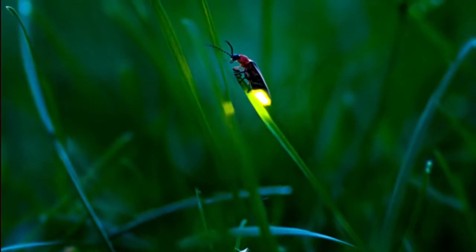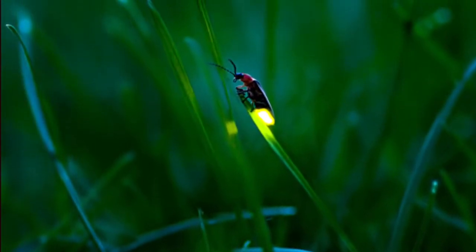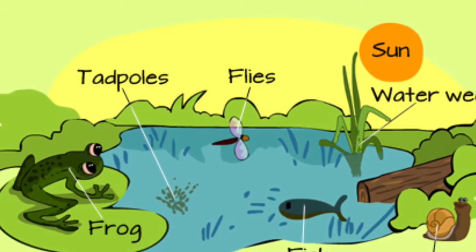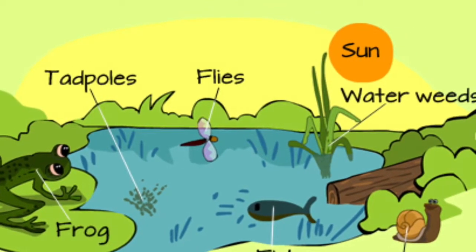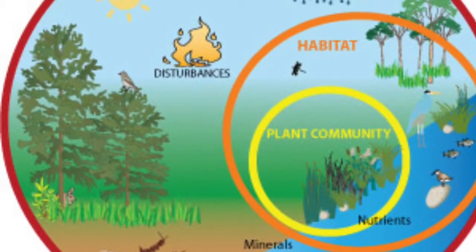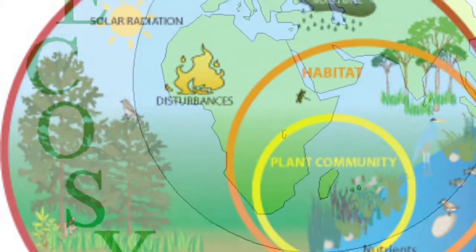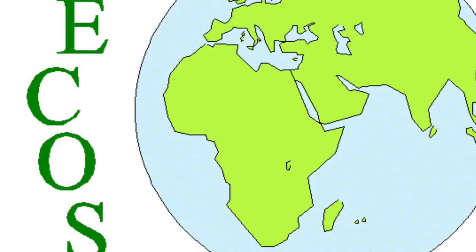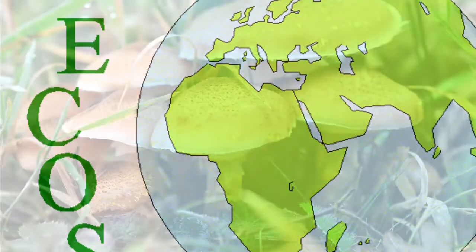Hi, my name is Firefly, and I'll be talking about ecosystem, fungus, and insects. I'll talk about ecosystem. They come in all sizes and work like an interconnected system. An ecosystem is a community of living organisms like plants and animals in conjunction with non-living components of their environment, things like air, water, and mineral soil.